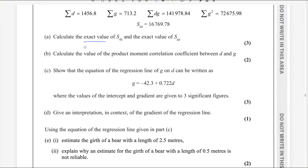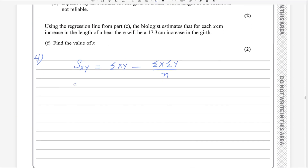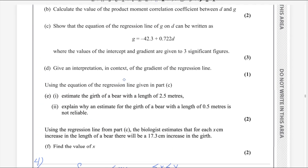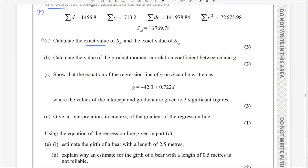In the first part, you need to find summary statistics of d on g. So Sdg — actually d is x and g is y. So we are replacing here. We will get Sdg equals sum of dg minus sum of d times sum of g divided by n. Now you just need to use the values given in the question. Replace the values: sum of dg is given, sum of g is given, sum of d is there, and we know that the number of bears is 8, so this is n.